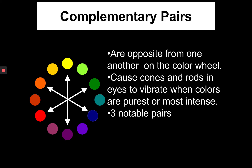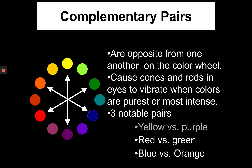Complementary pairs are opposites from one another. If they're very intense, the cones and rods of the eyes can vibrate. Here are three notable pairs: yellow and purple, red and green, and blue and orange. Please note that the word complement here is spelled with an E — not like 'compliment' meaning that shirt looks great on you. Complement spelled with an E means the relationship of colors that are opposite on the color wheel, especially these three pairs.